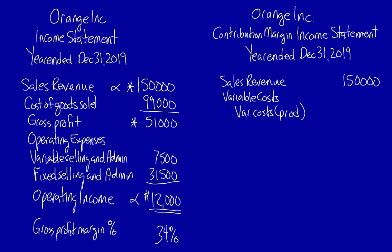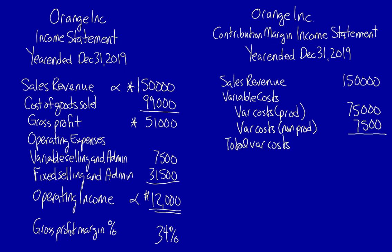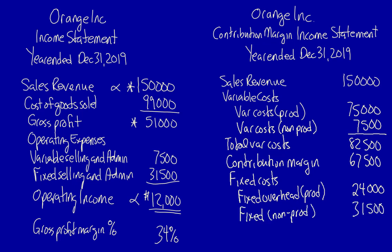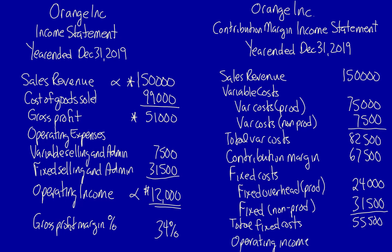Let's go back to the statement. Variable cost production: $75,000. Variable costs non-production: $7,500. Total variable costs: $82,500. Contribution margin: $67,500. Fixed costs: fixed overhead production was $24,000, then fixed selling and admin non-production was $31,500. Total fixed costs: $55,500. Operating income: $12,000.